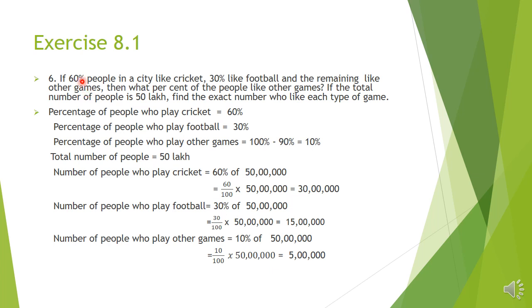Question number 6: If 60% of people in a city like cricket, 30% like football and the remaining like other games, then what percent of the people like other games? If the total number of people is 50 lakh, find the exact number who like each type of game. So here we have a city with people who like different games: cricket, football, and other games.